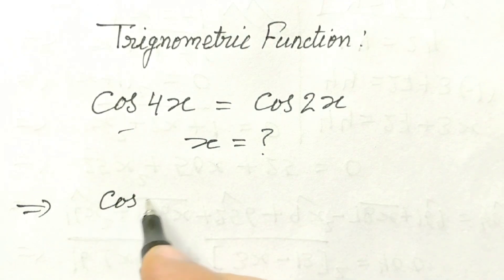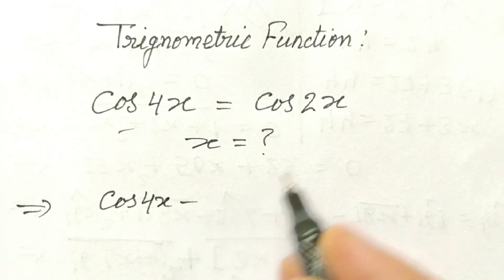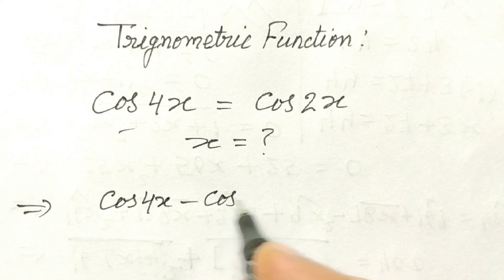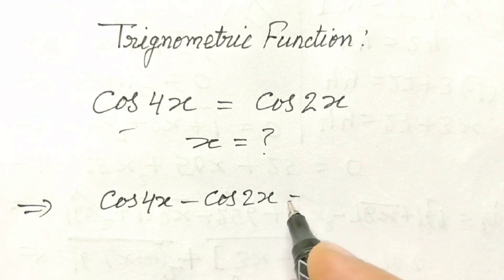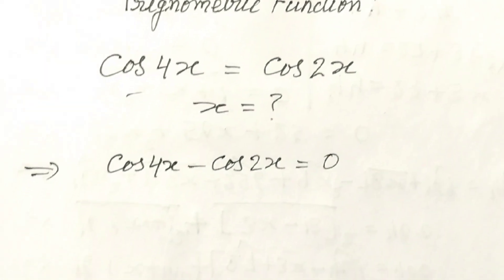Here, cos 4x minus cos 2x is equal to 0.